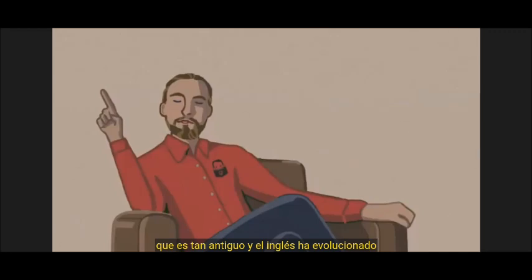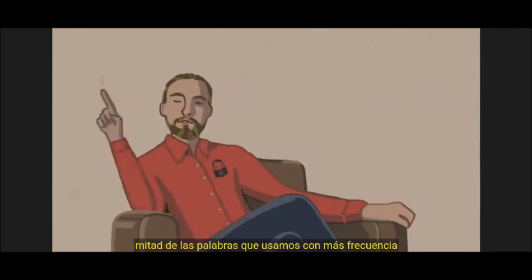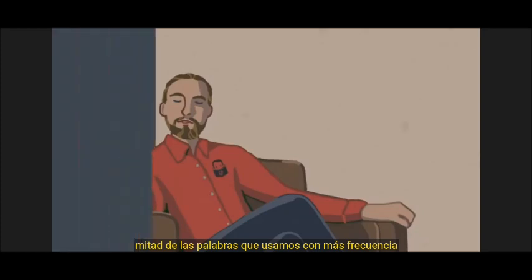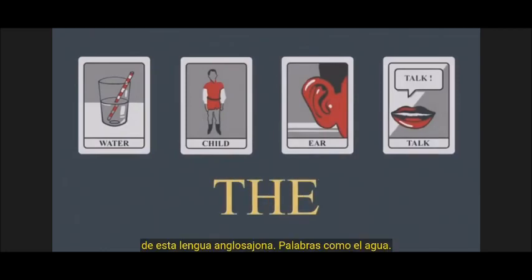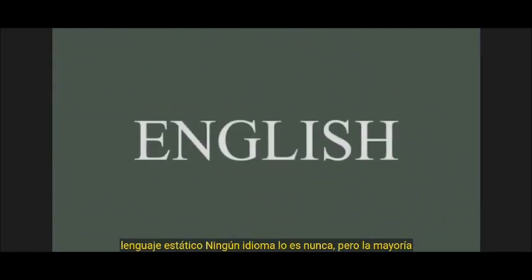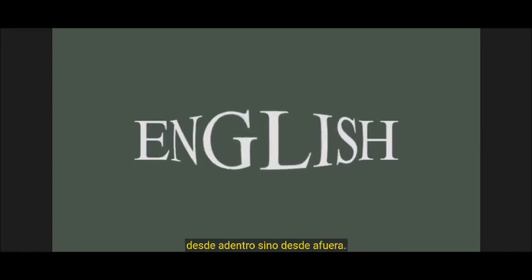It's so old, and English has evolved so much, that it may as well be a foreign language. While not understandable today, half of our most commonly used words come from this Anglo-Saxon tongue — words like water, child, ear, talk, and the. Basically, most short, simple words come from this Old English language. Old English was not a static language — no languages ever are — but most of the major changes to English through its history came not from within, but from without.